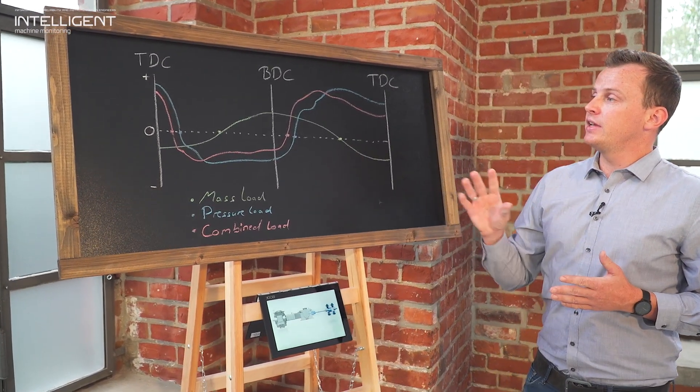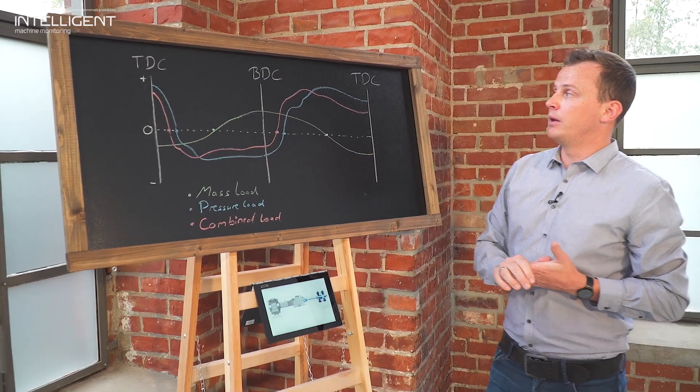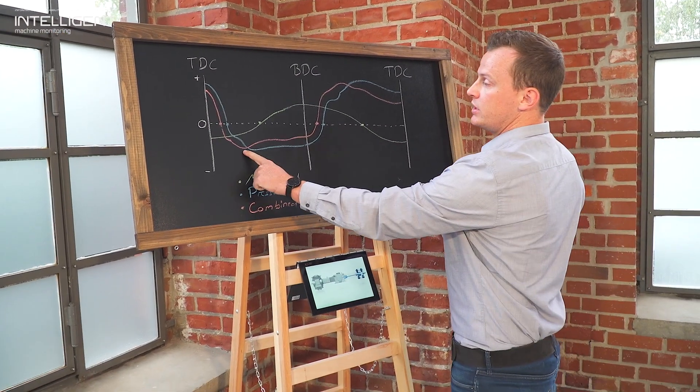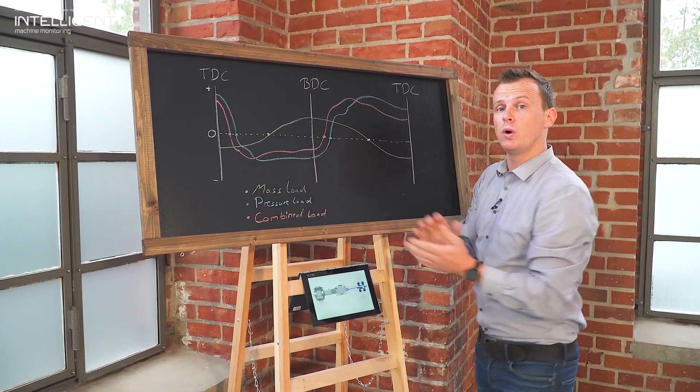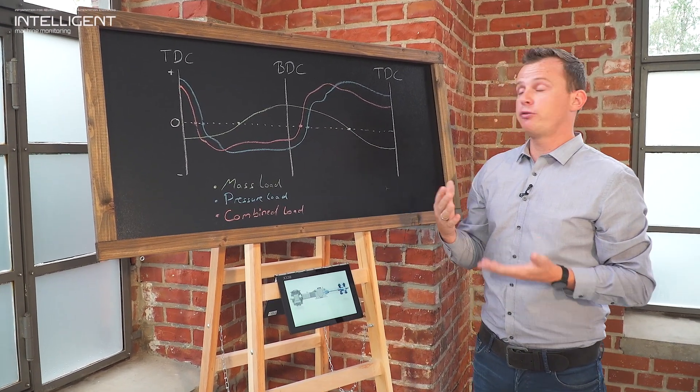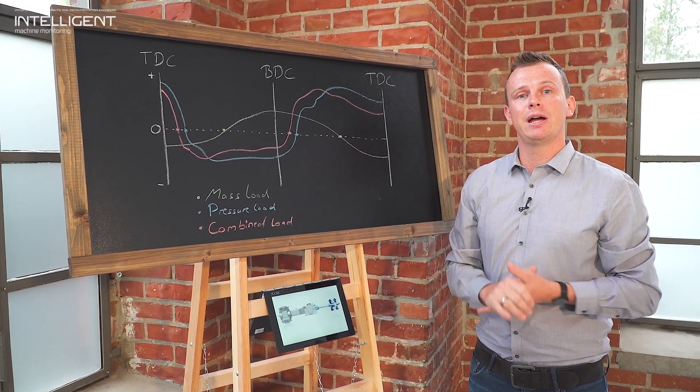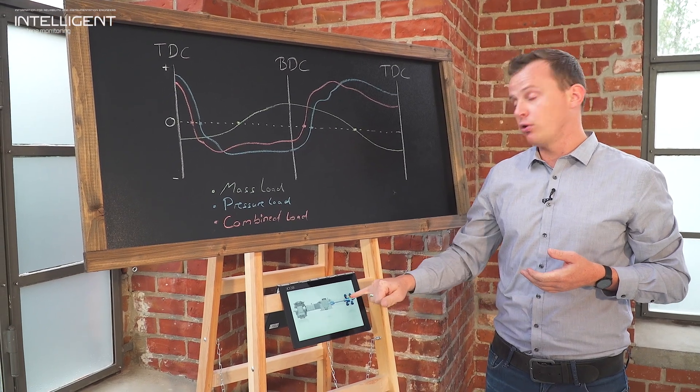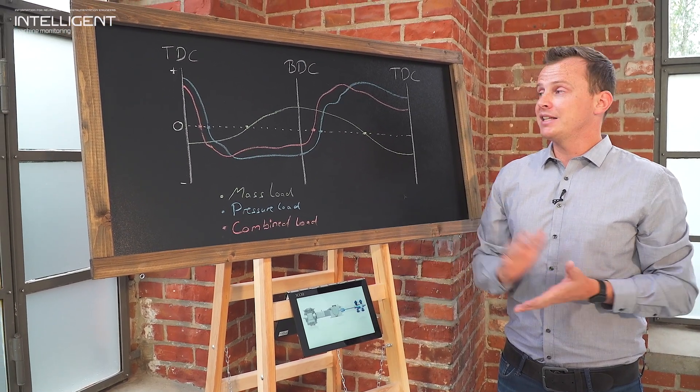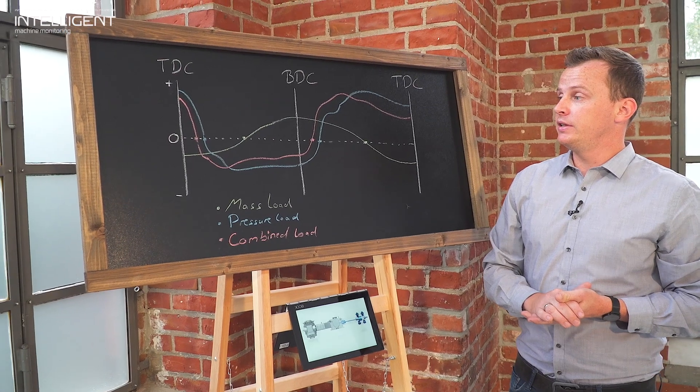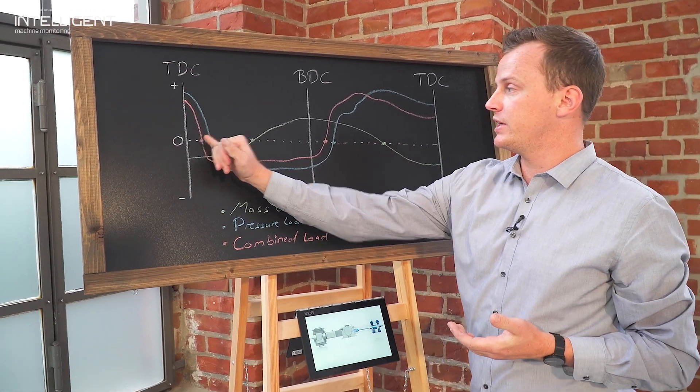The second important thing here on this curve are the maximum and minimum allowed ones. So here is the minimum and here is the maximum one. And if that exceeds the manufacturer requirements then for sure the piston rod can break as well.